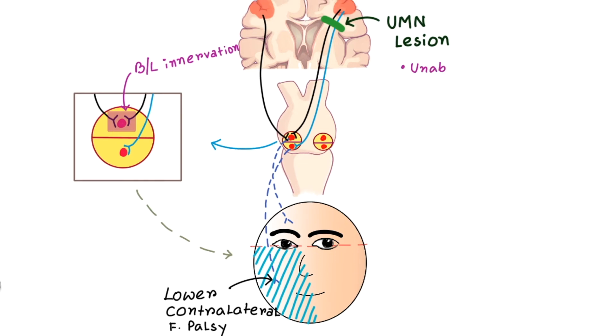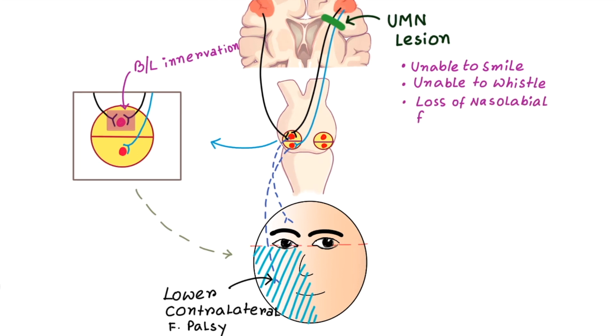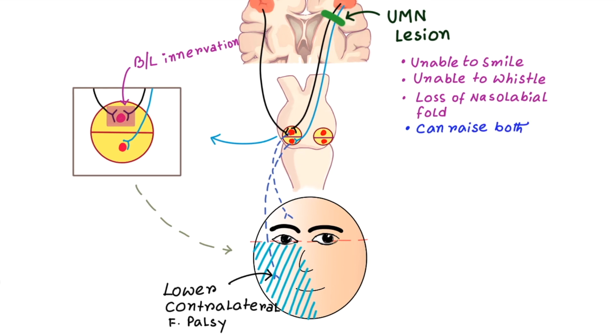In this case, you can see patient is unable to smile on affected side or simply unable to raise the corner of mouth. Patient is unable to whistle and there is loss of nasolabial fold. However, they can raise both eyebrows.